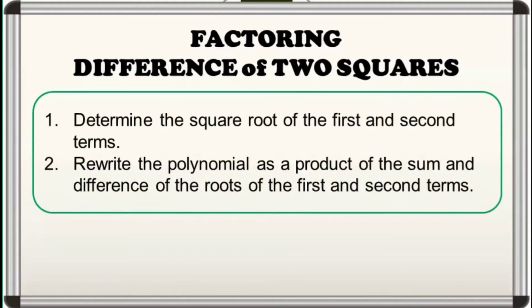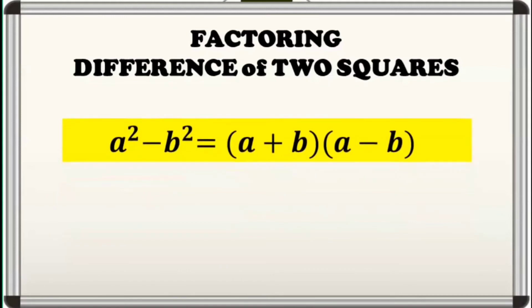Now, the steps that we have followed in our examples can be shortened by familiarizing this general formula. If we have a difference of two squares of the form a squared minus b squared, its factored form is always a product of sum and difference of two terms: quantity a plus b times quantity a minus b, or quantity a minus b times quantity a plus b. The order does not matter. Wherein a is the square root of the first term and b is the square root of the second term of the given difference of two squares.